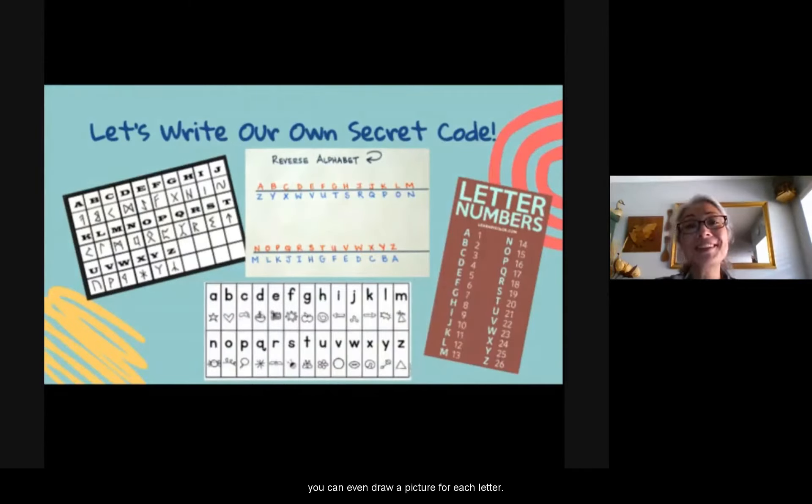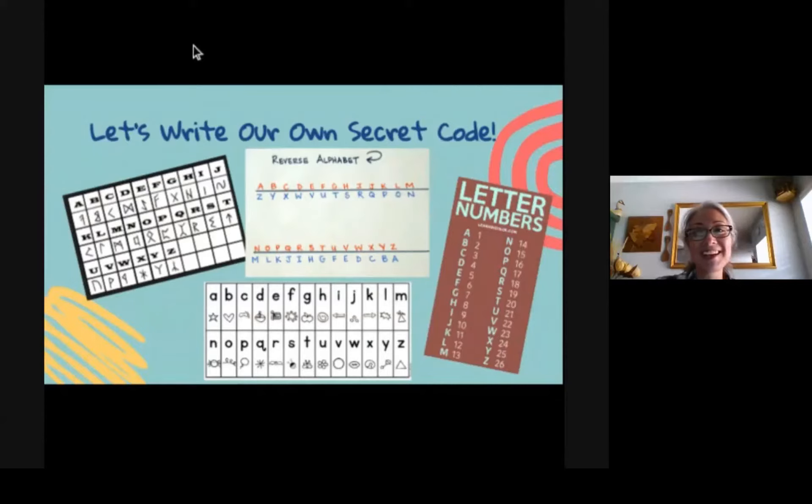Or you can try giving each letter a number. Or you could even draw a picture for each letter. So if you look at this chart right here, find the letter F. And do you see they've drawn a sun? So each time they want to write the letter F, they'll draw a sun instead. So it can be kind of tricky and complicated, but only as complicated as you want it to be.